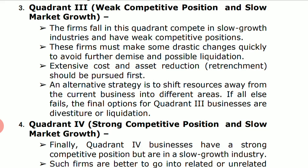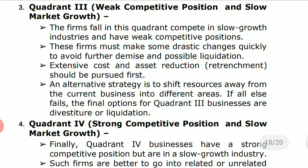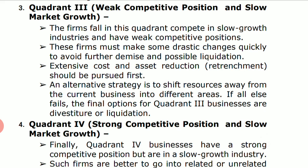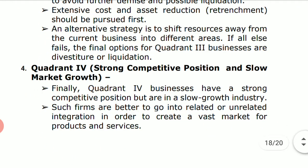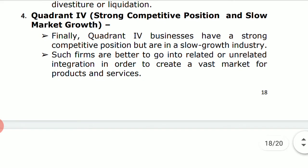Costs should be reduced and asset reduction through retrenchment should be there so overheads can be controlled. An alternative strategy is to shift resources away from the current business into different areas. If the company still fails, the final option for quadrant three businesses is divestiture and liquidation, to recover whatever amount can be recovered from assets and invest in another field.